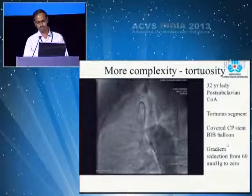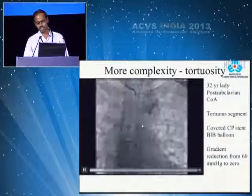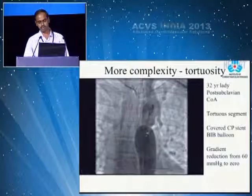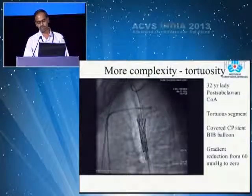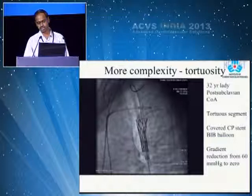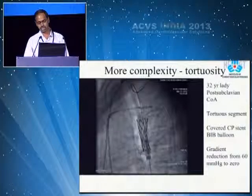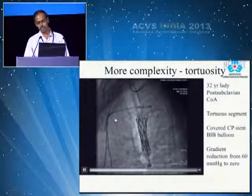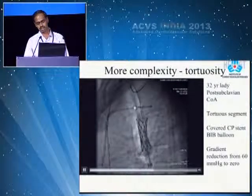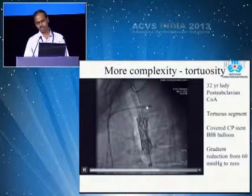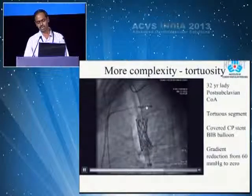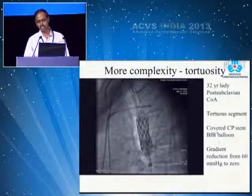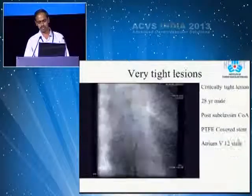This is an extremely tortuous coarctation. Whenever there is so much tortuosity, it is safer to use a covered stent because there can be rupture along the outer wall. This is a covered CP stent being inflated — not by a BIB balloon, but with an ordinary balloon. A useful tip is to place a pigtail catheter on the arch and keep checking with small hand injections whether our position is correct at every stage. This results in complete elimination of the gradient.